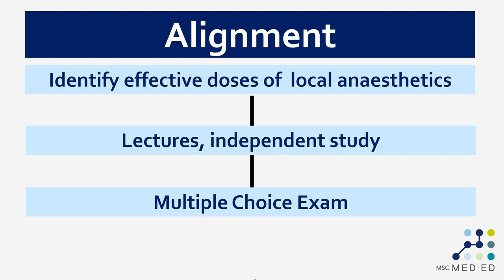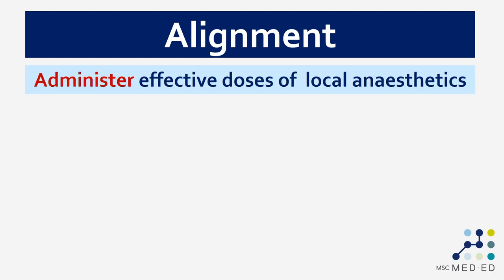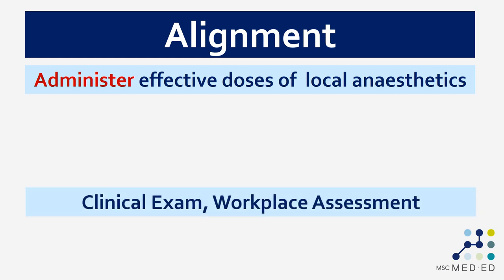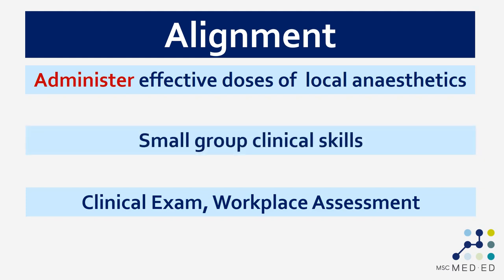Another important point about learning outcomes is to make sure that they move with your learner. If we're graduating junior doctors, pharmacists, nurses, or some other health professional, it's not sufficient to say that they can identify effective doses of local anesthetics — we often want them to administer effective doses of local anesthetics. Having written this new learning outcome for a later phase of learning, instead of a multiple choice test, we would assess this using a clinical exam like an OSCE or a workplace-based assessment. Small group clinical skills teaching is now far better suited to this updated outcome than lectures or independent study.